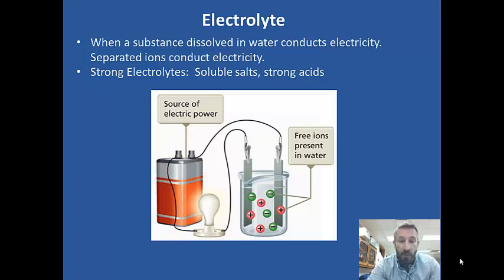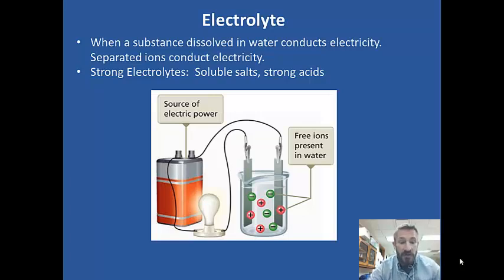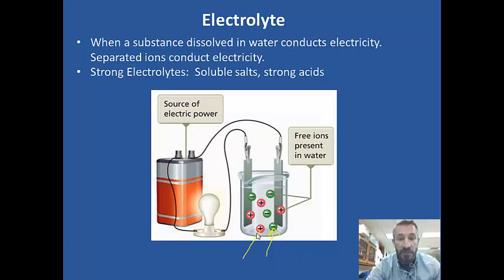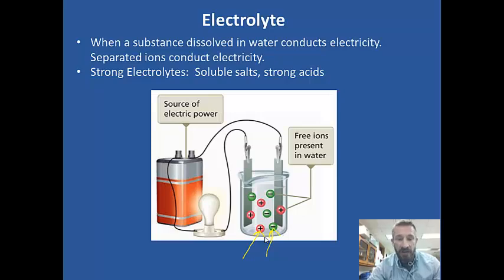For example, if we put hydrochloric acid or NaCl in water — hydrochloric acid is a strong acid, NaCl is a soluble salt — it would dissolve completely and produce a great number of ions. We see those in the drawing: it produces negative ions and also positive ions. That would enable it to conduct electricity, and thus it would be an electrolyte.